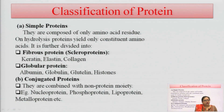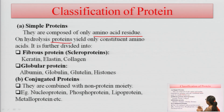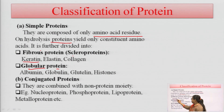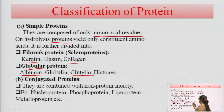Regarding the classification of proteins: the first type is simple protein, which is composed of only amino acid residues. On hydrolysis, this type yields only amino acids. Simple proteins are further divided into fibrous proteins — also known as scleroprotein, with examples like keratin, elastin, and collagen — and globular proteins, with examples like albumin, globulin, glutelin, and histones.